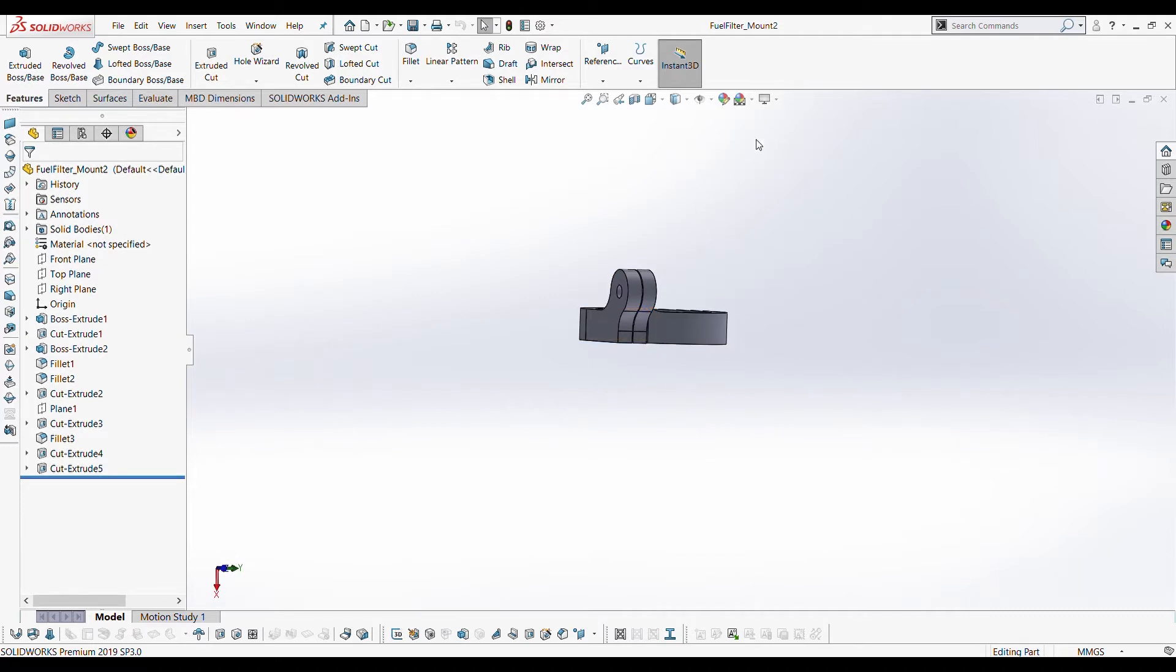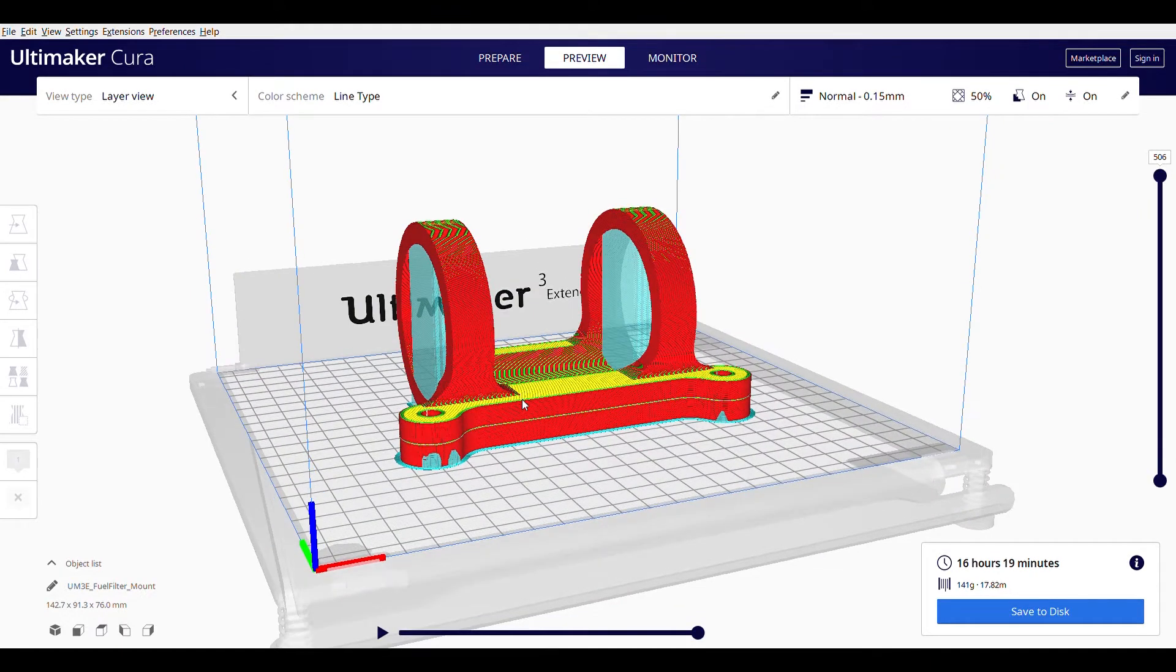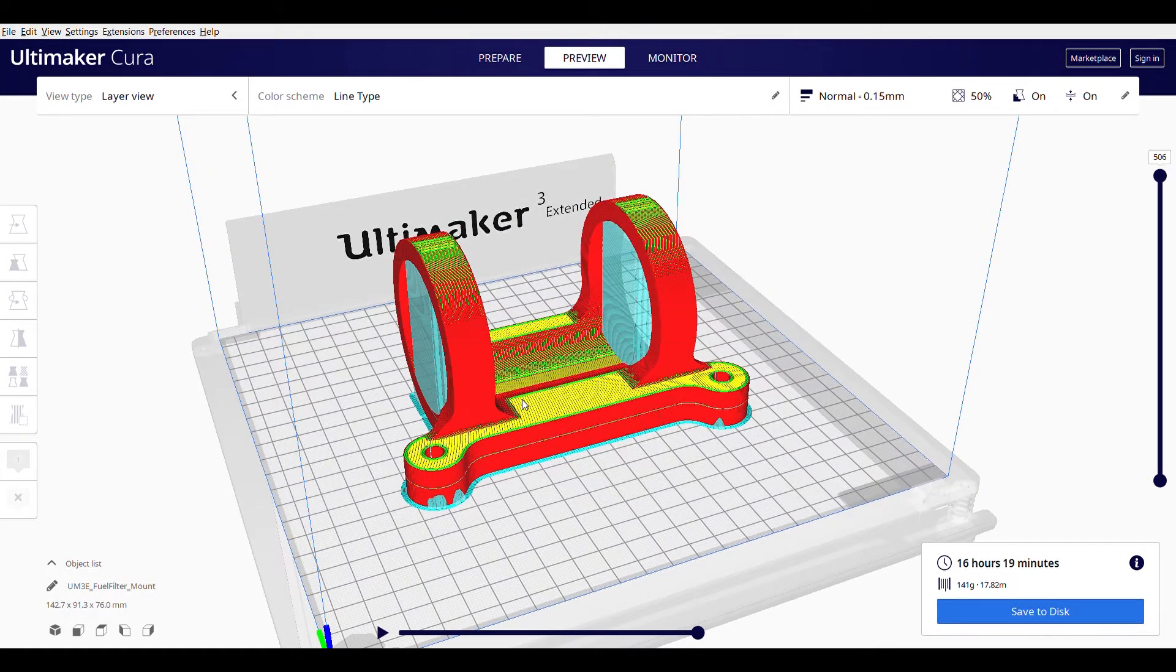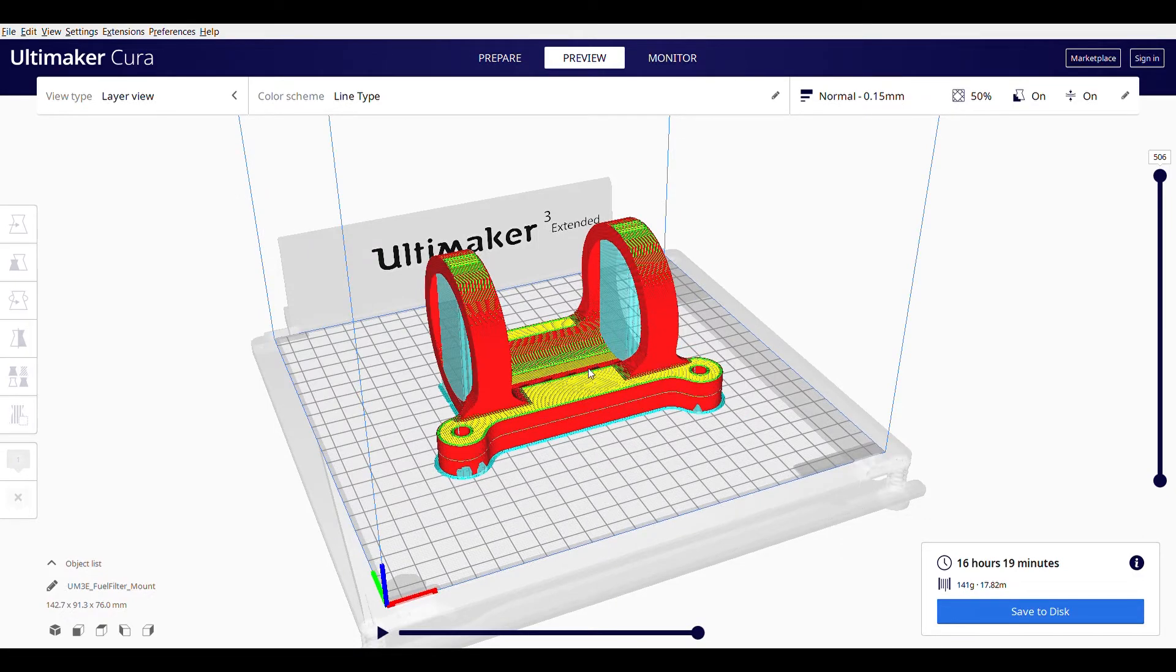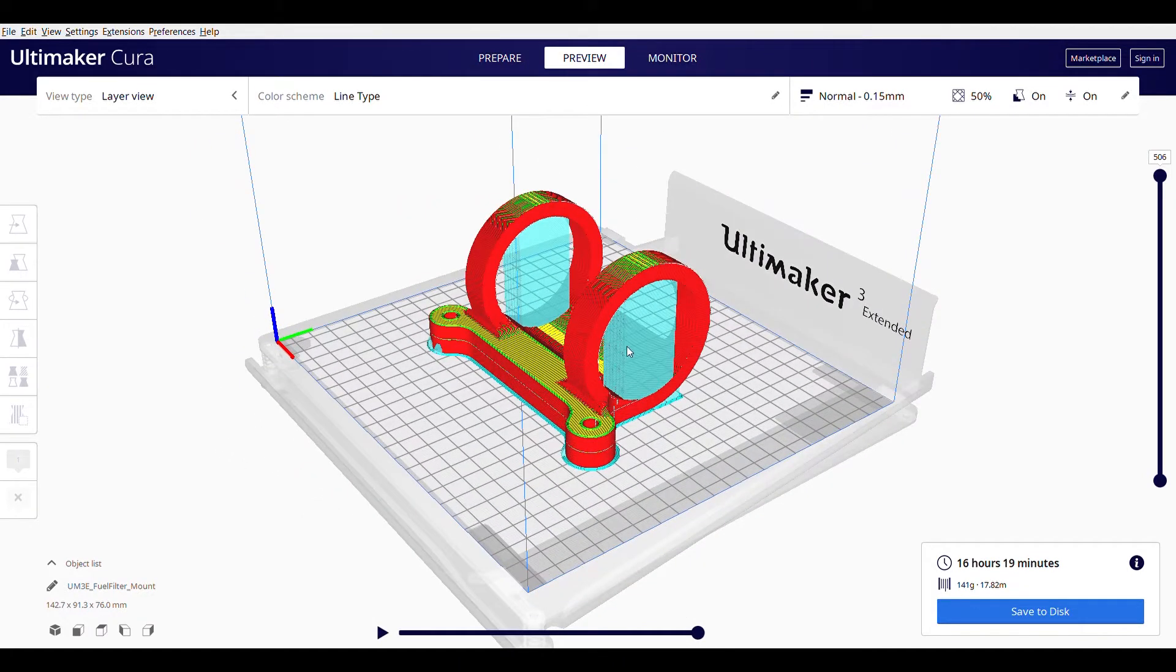Okay, so this is Cura - this is an open source free slicing software for 3D printers, so anyone can use this. This is the original design that I was talking about. So here's all that support material in this light blue color, and notice it takes 16 hours and 19 minutes - pretty long print. I just know that these circles wouldn't be perfect once the print was done.